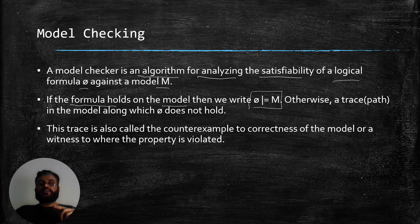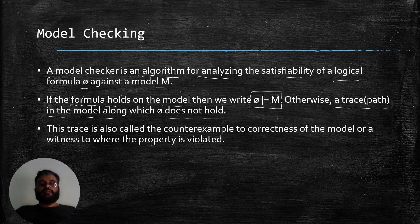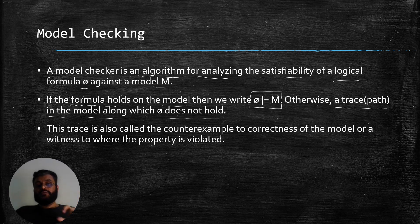If a formula doesn't hold on a model, the model checker gives a trace or a path in the model along which the formula does not hold. The formal verification community wants proof of correctness established, so counter-examples are not very interesting for them. However, what interests the testing community about a counter-example is that it reflects some bad behavior in the model, and that is where the interest of the tester lies — finding out where specifically the bad parts of the program are.